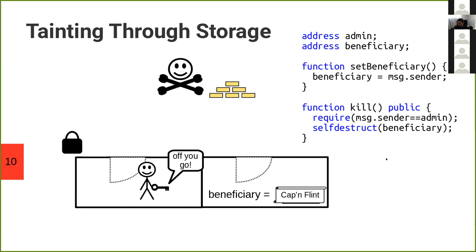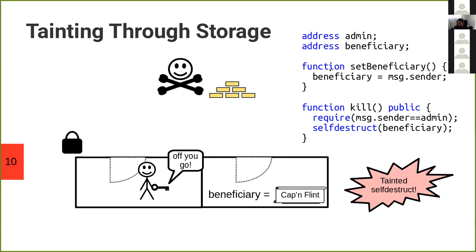The point is that tainted information can persist over multiple transactions via storage. It can then be propagated downstream by authorized users — like the administrator — in places of the code which are inaccessible to attackers. The attacker can never call the kill function because they'll be blocked by the guard. But the administrator, who may be able to call kill, will take along information that was passed by the attacker. This kind of vulnerability is called tainted self-destruct.